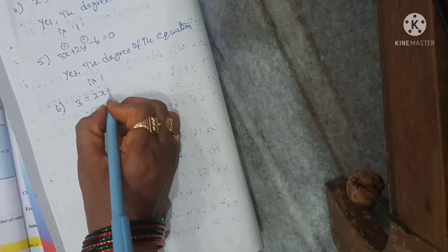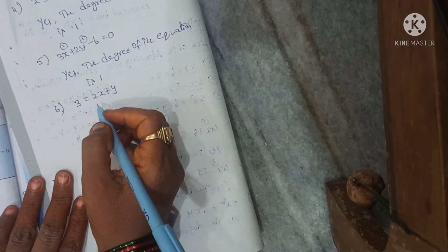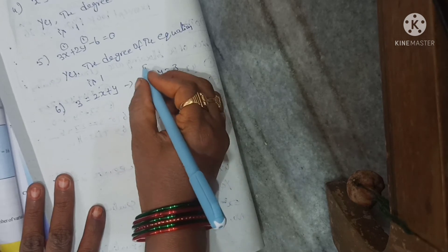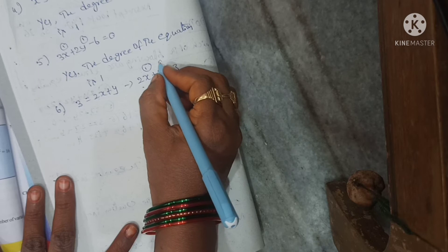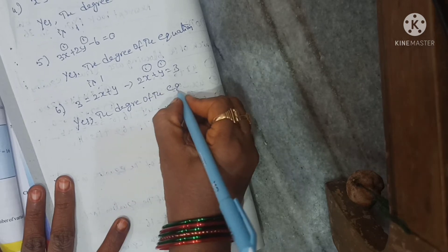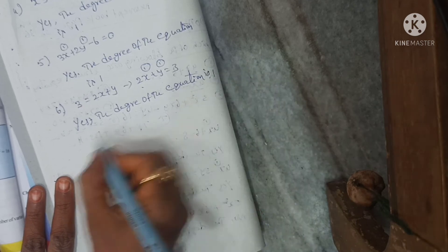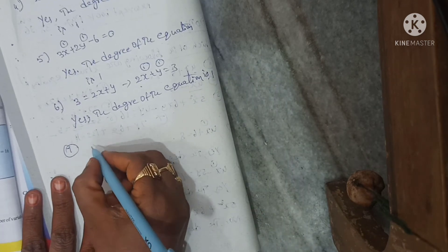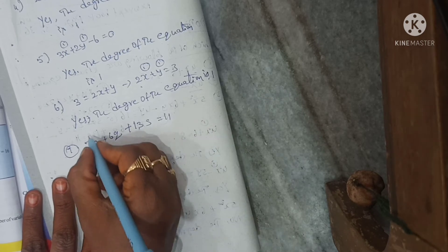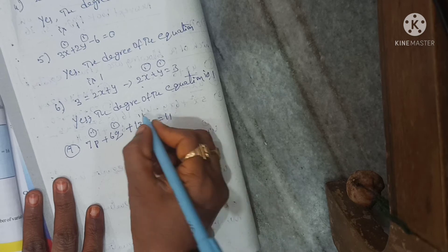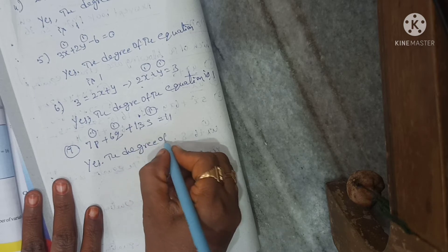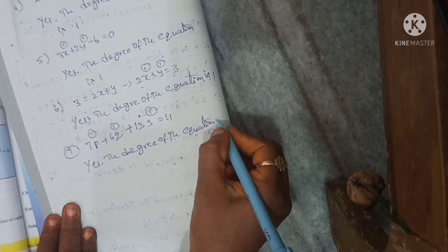Sixth one: 3 is equal to 2x plus y, rewritten as 2x plus y is equal to 3. Degree of the equation is 1. So yes. Seventh one: 7p plus 6q plus 13s is equal to 11. This is also degree 1 for each term. So yes, the degree of the equation is 1.